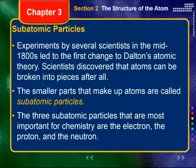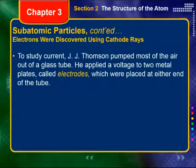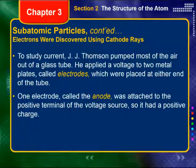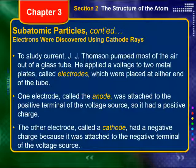The three subatomic particles most important to chemistry are the electron, the proton, and the neutron — that's actually the order in which they were discovered. Electrons were discovered using cathode ray tubes. The idea was not to find the electron, but to study electrical current. A scientist named J.J. Thomson pumped out most of the air out of a glass tube, creating a vacuum. He applied a voltage to two metal plates called electrodes placed on either end of the tube. One electrode, called the anode, was attached to the positive terminal of a battery. The other, called the cathode, had a negative charge.